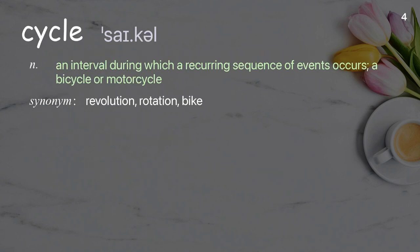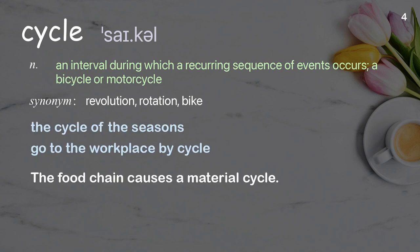Brain: the organ inside the head that is responsible for one's movement, thought, memory, and feeling. Examples: basic brain function, permanent brain damage. X-rays revealed a small tumor in his brain.